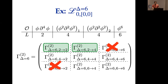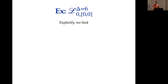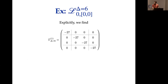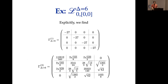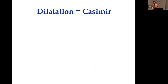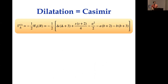The anomalous dimension matrix is minus one-half times the Casimir operator, expressed in terms of dimension delta, SO(3) spin s, and Dynkin labels a and b for SO(5). The consequence is that the first-order correction to the dimension of every state does not depend on the details of how the state is built, but only on its representation. The degeneracy present in the free theory is therefore not lifted at tree level — and only at second order does a non-trivial mixing problem arise.